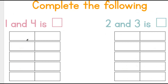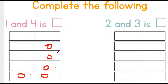Example number three: one and four. One, two, three, four. Let's count together: one, two, three, four, five. One and four equals five.